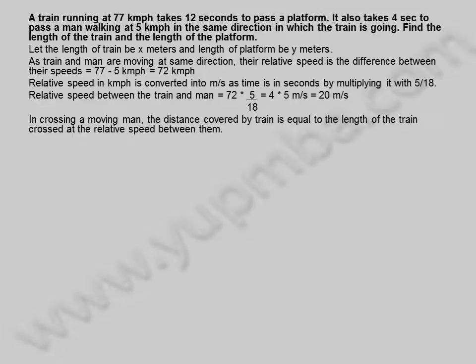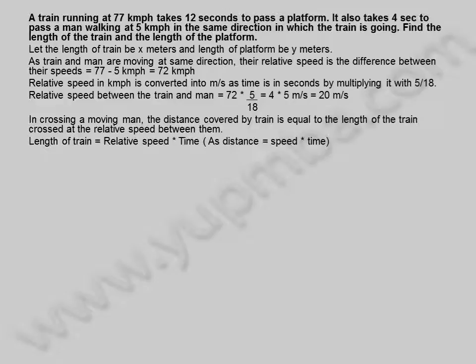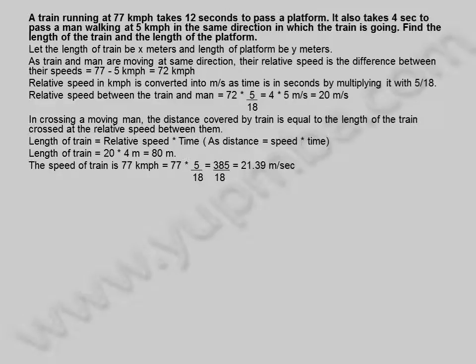In crossing a moving man, the distance covered by the train equals the length of the train, crossed at the relative speed between them. Length of train equals relative speed into time, as distance equals speed into time. Length of train equals 20 into 4 meters, equals 80 meters. The speed of train is 77 kilometers per hour, equals 77 into 5 divided by 18, equals 385 divided by 18, equals 21.39 meters per second.